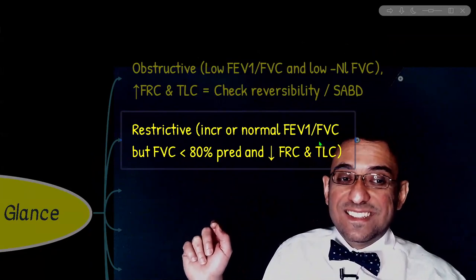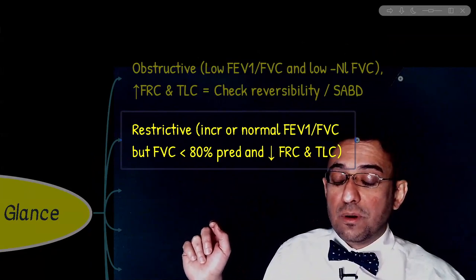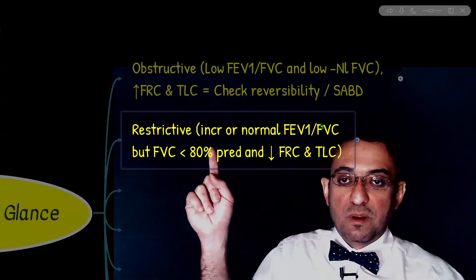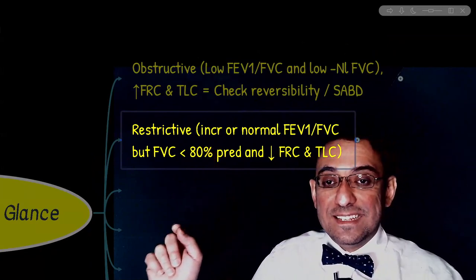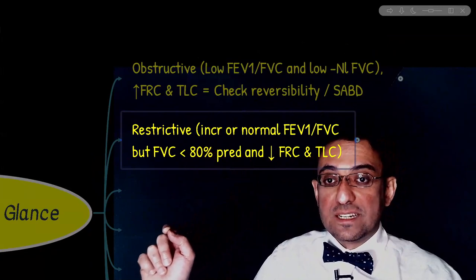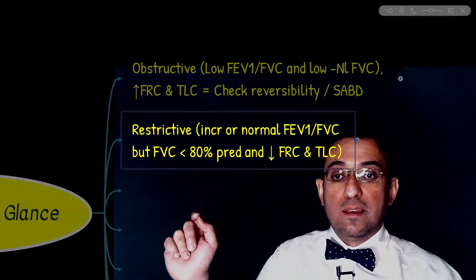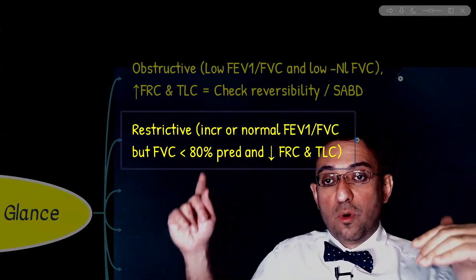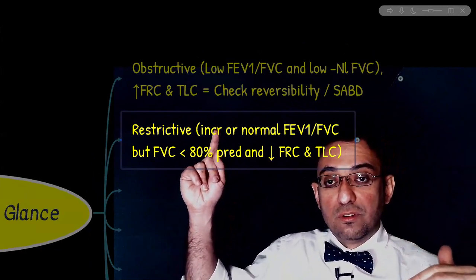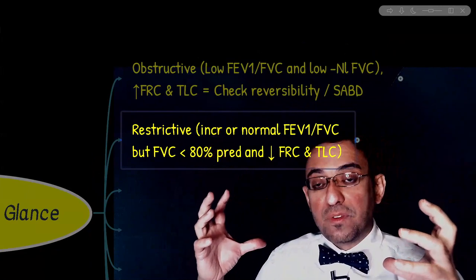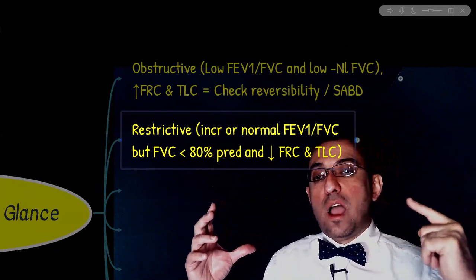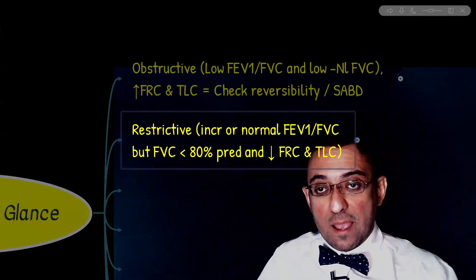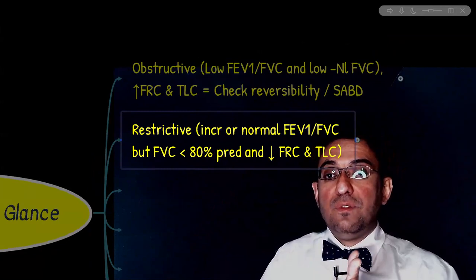In restrictive lung disease, FVC — the denominator — is decreased out of proportion to FEV1. If in a fraction the denominator is decreased more than the numerator, the total value of the fraction can increase. That's why we say the FEV1 to FVC ratio is increased in restrictive lung disease. So that's the analysis of FEV1 and FVC.